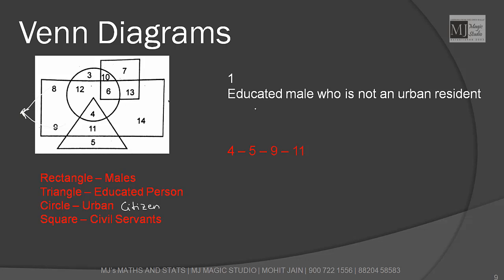Educated male. Educated male is rectangle. Urban resident is circle. I need to find portion of rectangle which is not covered by C. So we have male which is rectangle, urban resident which is circle, and educated which is triangle. I need T + R - C. Just look out for T and R. This is T and R but minus C is 11.